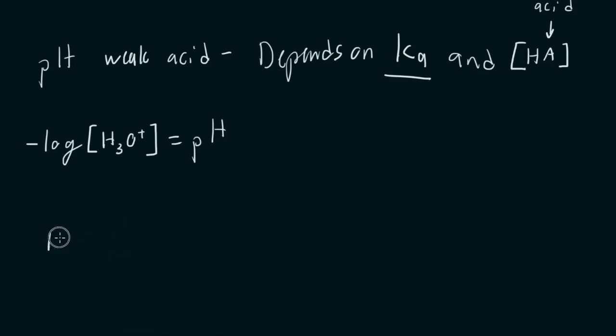So we're going to come back to the definition of Ka. It's always going to be the concentration of that H3O+ times the concentration of whatever conjugate base we have, and it's going to be divided by the initial concentration of our acid.